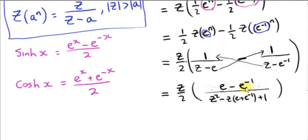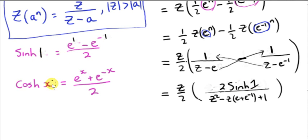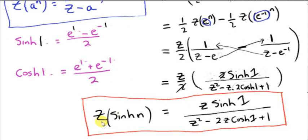Look at the numerator here: e minus e to the minus 1. If we replace x by 1 in the sinh function, we can replace the numerator with 2 times sinh(1). Similarly for the cosh function, if we replace x with 1, we can replace the denominator term with 2 times cosh(1). So at last, we have found the Z-transform of sinh(n): it is Z times sinh(1) over Z squared minus 2Z times cosh(1) plus 1.